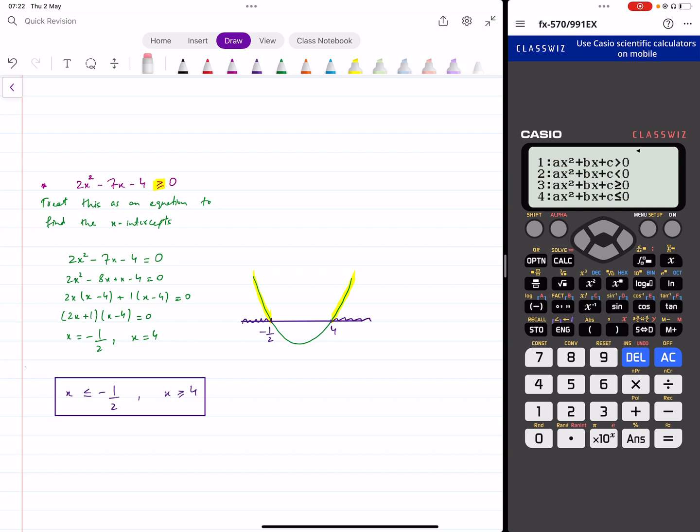There are four possibilities, right? Either you can have a greater than sign or less than sign, greater than equal to sign or less than equal to sign. Which one do we have greater than equal to? So we press button 3 here. Now we put the coefficients. 2, minus 7, minus 4. And that's it.